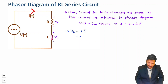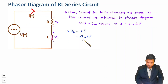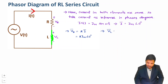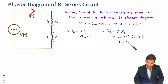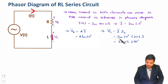So VR in phasor form is R·Im∠0°. For VL in phasor form, VL = I × ZL, where I = Im∠0° and ZL = jωL. In phasor form this becomes Im·ωL∠0° × ∠90° (since the angle of j is 90°). In multiplication angles get added, so VL = Im·ωL∠90°.